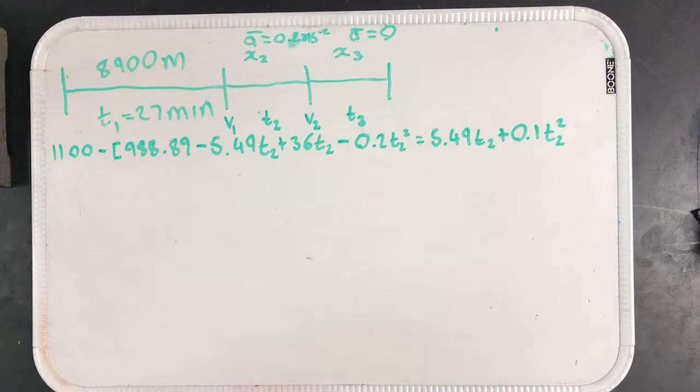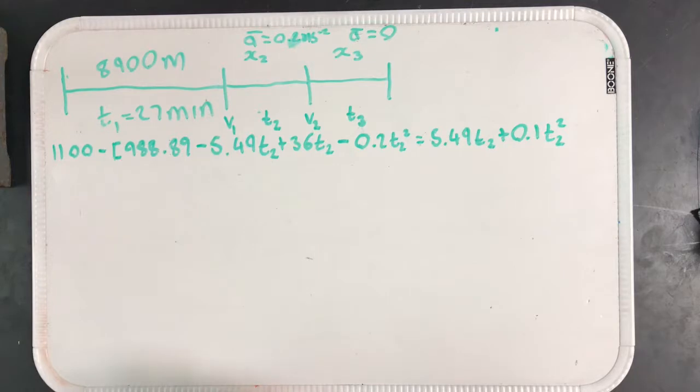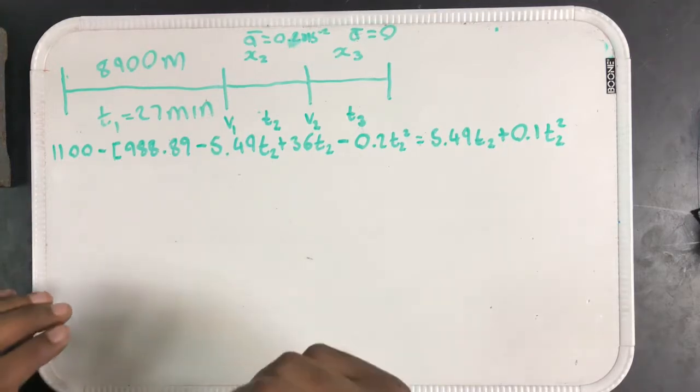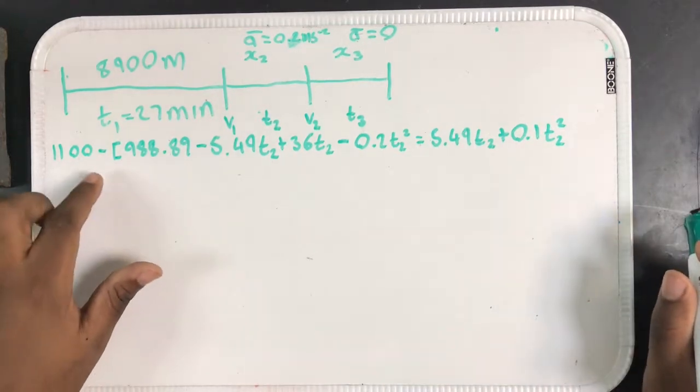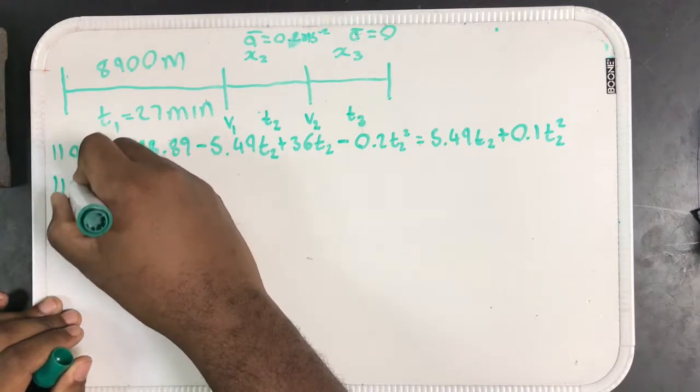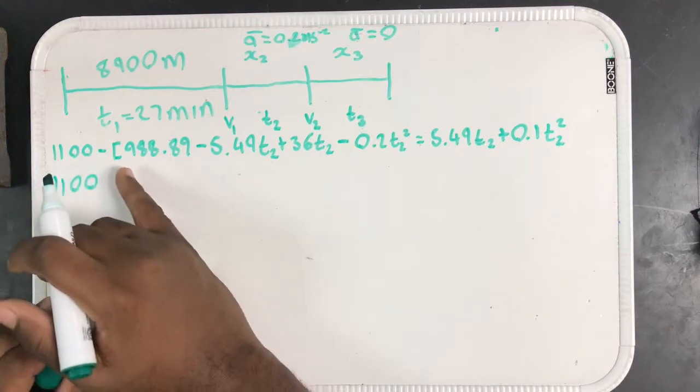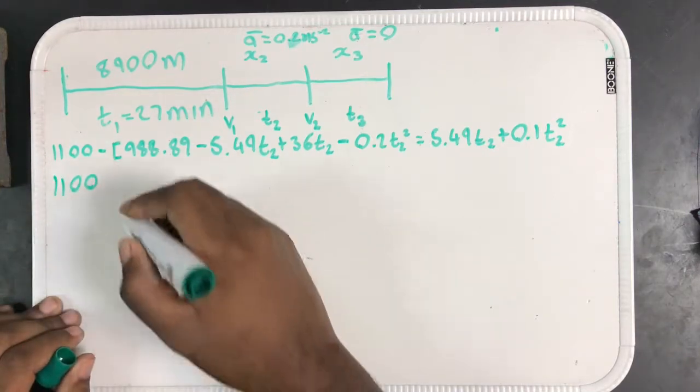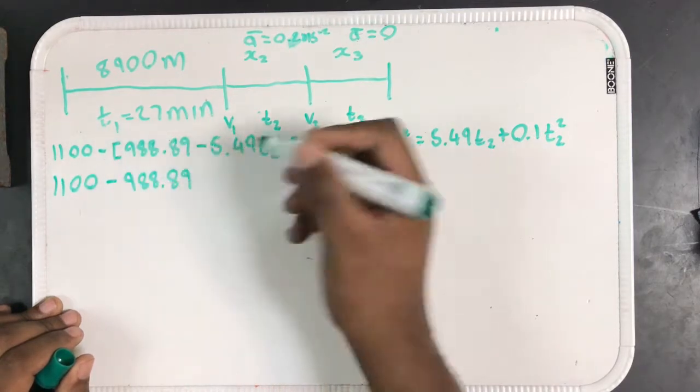I always never simplify until I get to the last step, except if something cancels out. First I'm going to distribute this negative. When I was doing this problem prior, I made the mistake of not accounting for this negative here. So I actually had positive 988.89, but this is supposed to be negative 988.89.